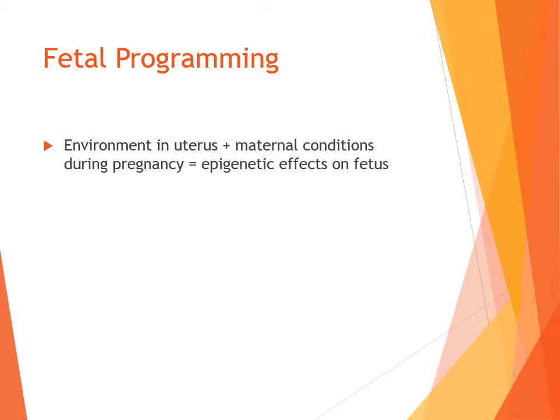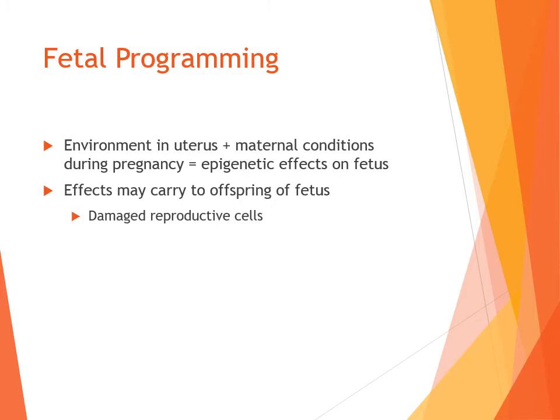We know that the uterine environment — the prenatal environment and the conditions of the mother during pregnancy — can have epigenetic effects. These effects may carry on to the offspring of the fetus. Similar to those rat studies discussed previously, the environment can actually change genetic information that is then passed on to offspring. The same thing can happen in humans.